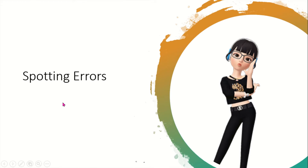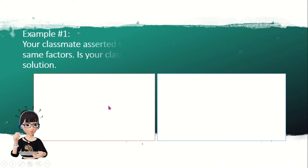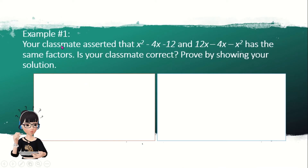Next, in this video tutorial, we're going to discuss how to solve problems with spotting errors. So let's have example number one. Your classmate asserted that x squared minus 4x minus 12 and 12 minus 4x minus x squared have the same factors. Is your classmate correct? Prove by showing your solution.